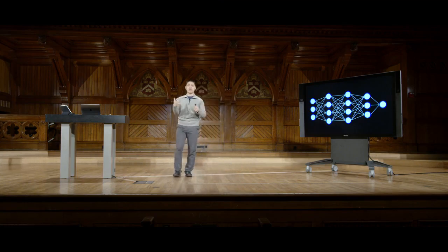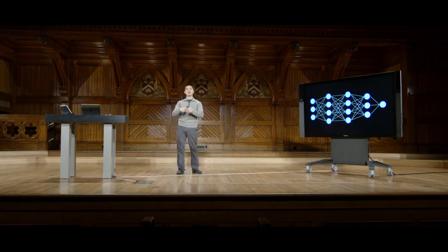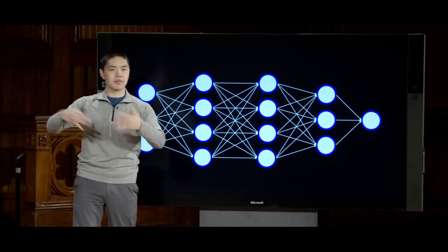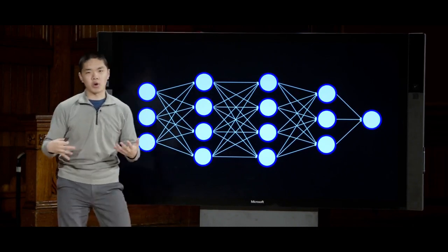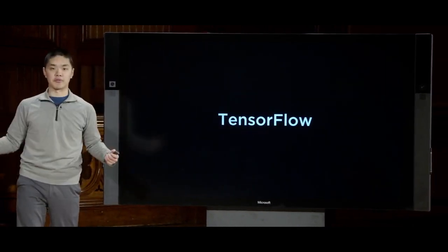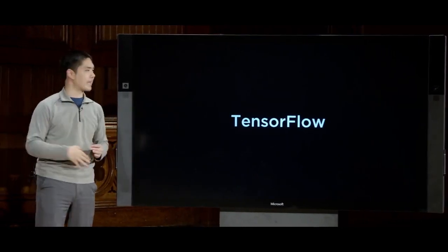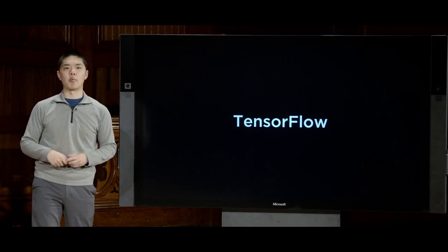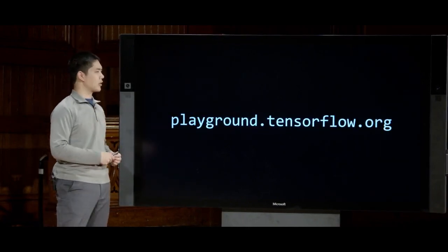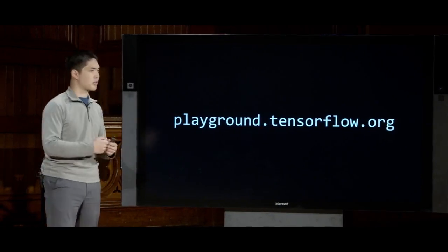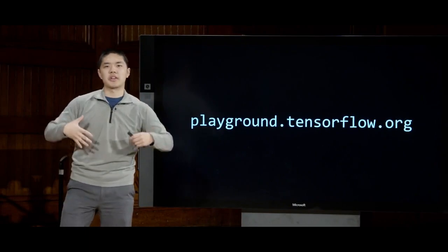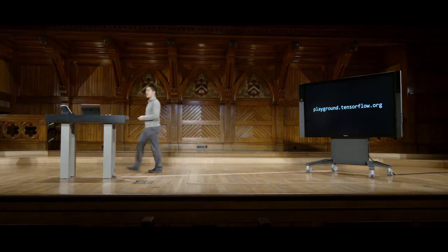Now we'll put these ideas into code. There are a number of neural network libraries available. One of the most popular, developed by Google, is TensorFlow — a library we can use for quickly creating and running neural networks. Before writing code, we'll look at TensorFlow's playground, which lets us play around with neural networks and different layers to get a sense for what we can do by taking advantage of them.